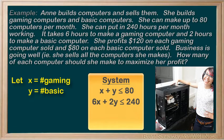A couple of extra constraints for our system: x has to be greater than zero and y has to be greater than zero. That is, we can't make a negative number of either computer. Makes sense. We've established our system of inequalities.